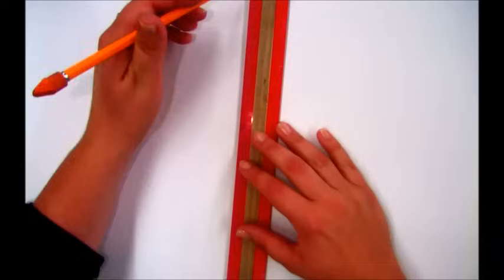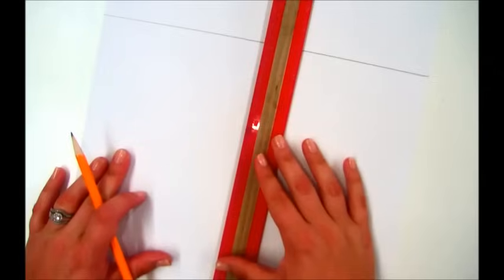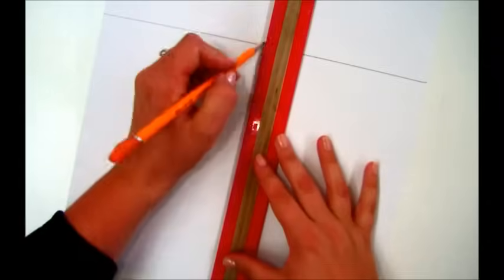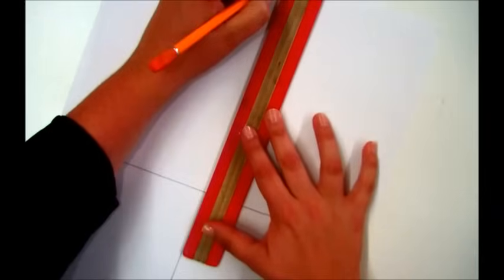For the Elements of Art poster, you're going to need to divide your paper into eight sections. Start by dividing it across vertically and horizontally. You should have four sections on your paper.